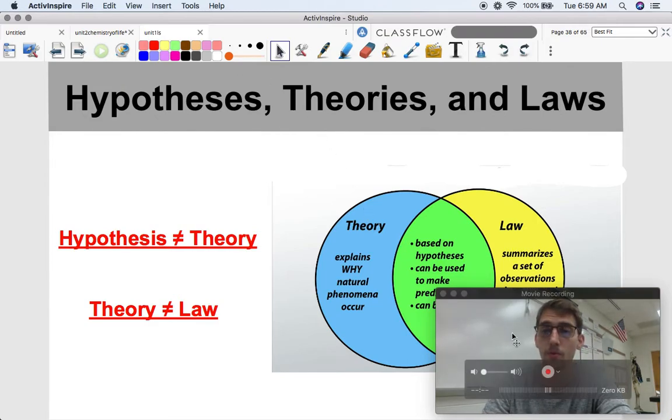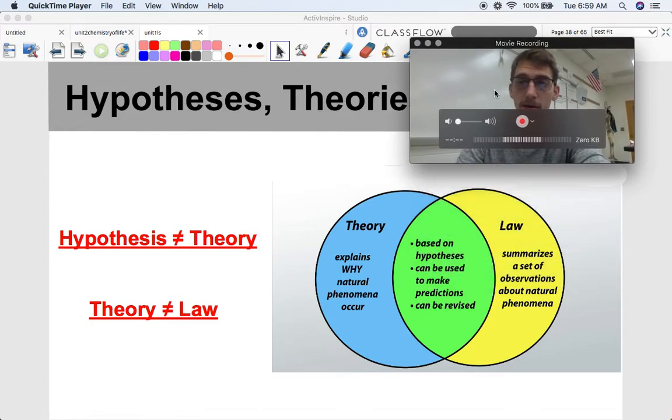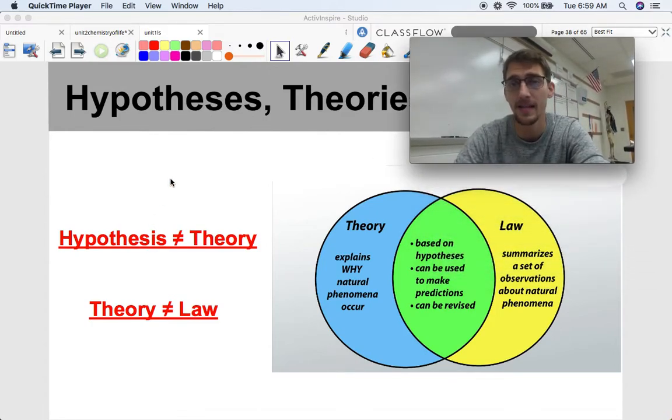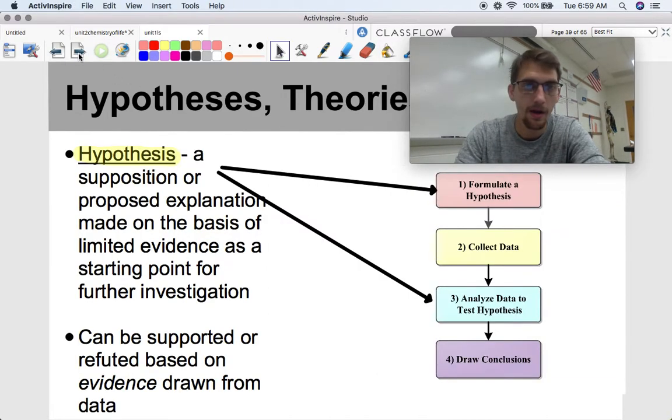Here's something that I really want to get off the bat right away: a hypothesis is not the same as a theory, and a theory is not the same as a law. They have three separate and distinct purposes in science, and each has their own role to play, and they're not all the same thing. This Venn diagram does a pretty good job summarizing the similarities and differences between theory and law, but we're going to come back to that in a second.